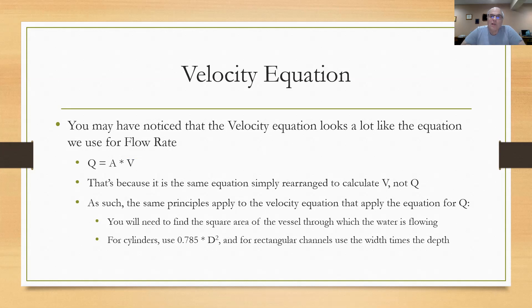When we do velocity equations, the principles that apply for flow rates also apply for velocity. You'll need to find the square area of the vessel through which the water is flowing. For cylinders, you can use 0.785 times the diameter squared, or pi 3.14 times the radius squared. For rectangular channels, we would multiply the width times the depth. You're getting a square area, just a plane in two dimensions.